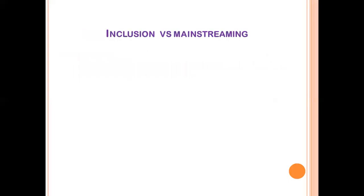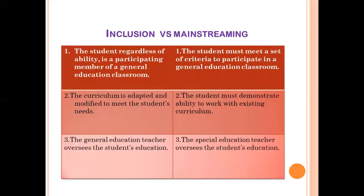Now let us look at inclusion versus mainstreaming. In inclusion, the student, regardless of ability, is a participating member of a general education classroom. In mainstreaming, the student must meet a set of criteria to participate in a general education classroom. In inclusion, the curriculum is adapted and modified to meet the student's needs, while in mainstreaming, the student must demonstrate ability to work with the existing curriculum. In inclusion, the general education teacher oversees the student's education, whereas in mainstreaming, the special education teacher oversees the student's education.